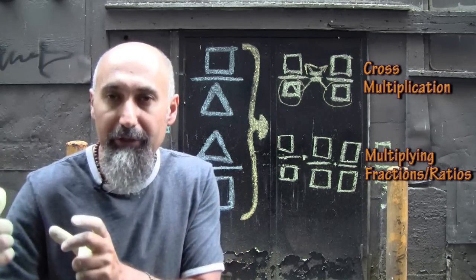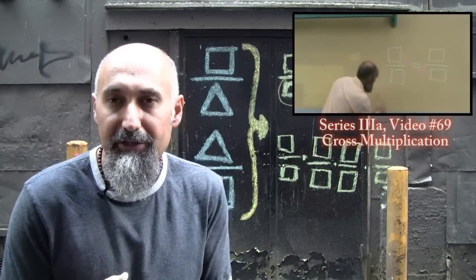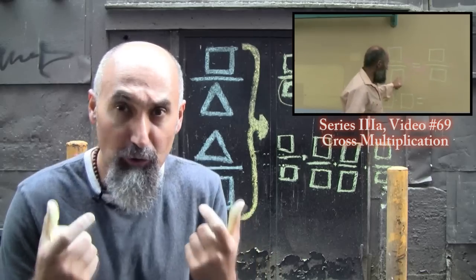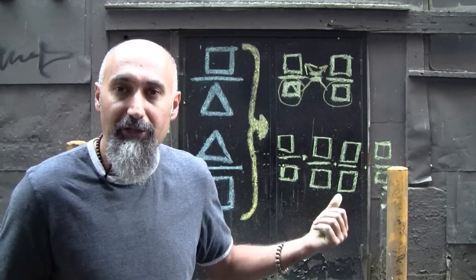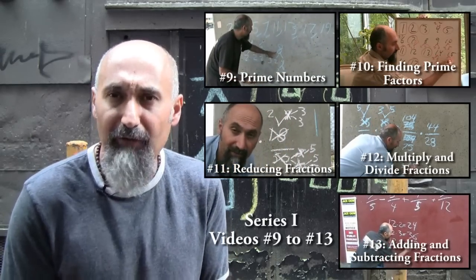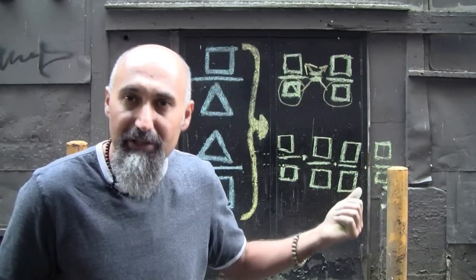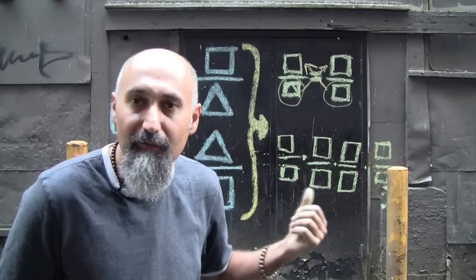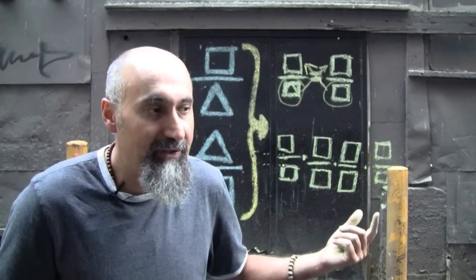Cross multiplication was already covered in Series 3a — there's a short video teaching you how to do it, and it's super powerful, so learn it. Multiplying fractions together was covered in Series 1 — four or five videos on how to multiply fractions, add fractions, and break things down to prime factors. The key thing to know is that anything from the top can cancel out anything from the bottom, as long as there are no plus or minus signs between them.